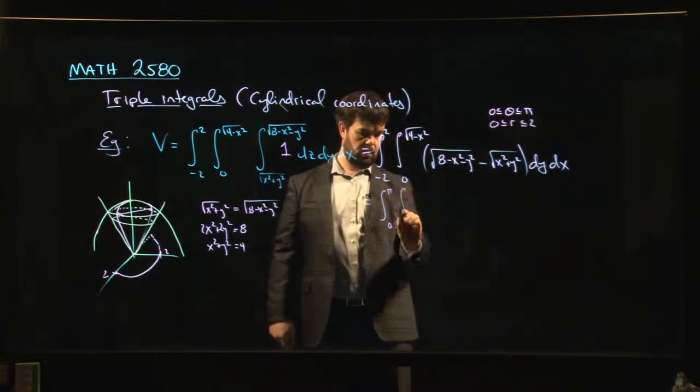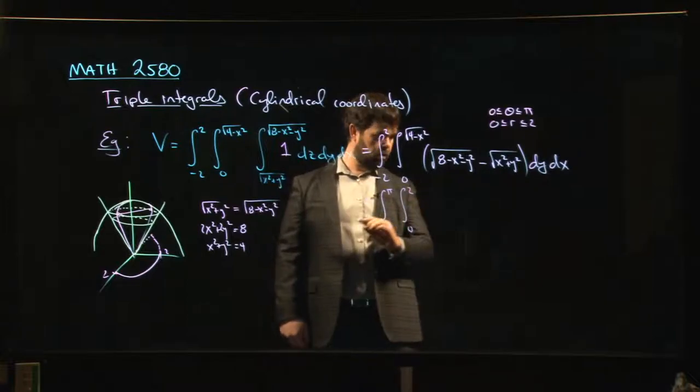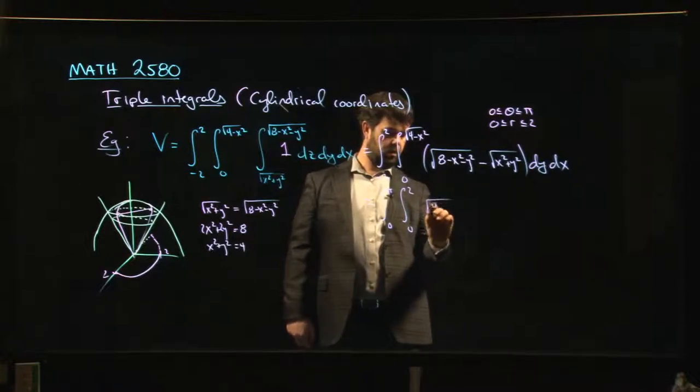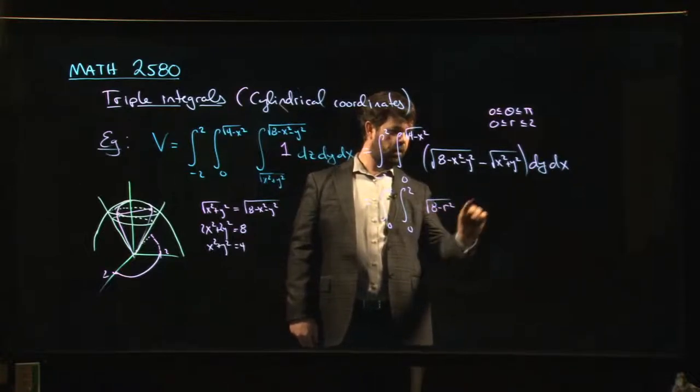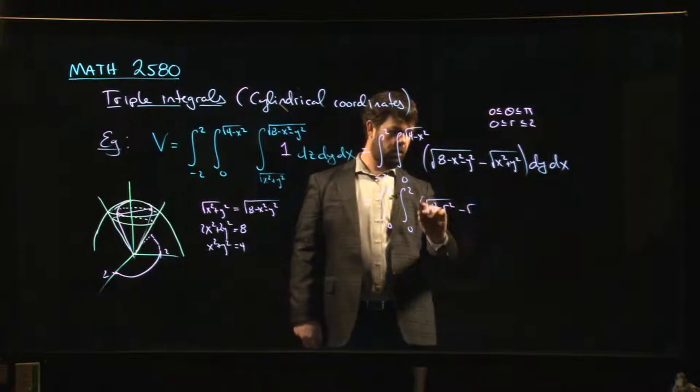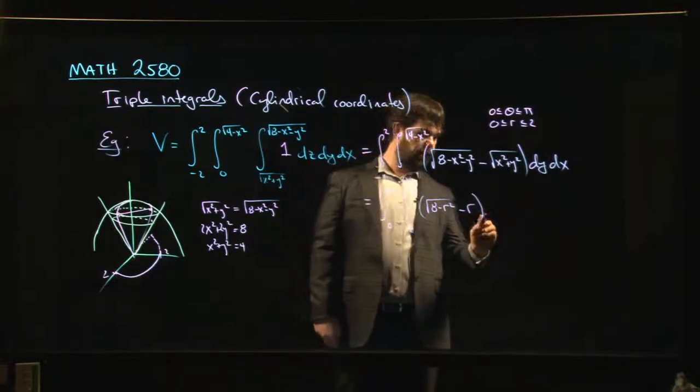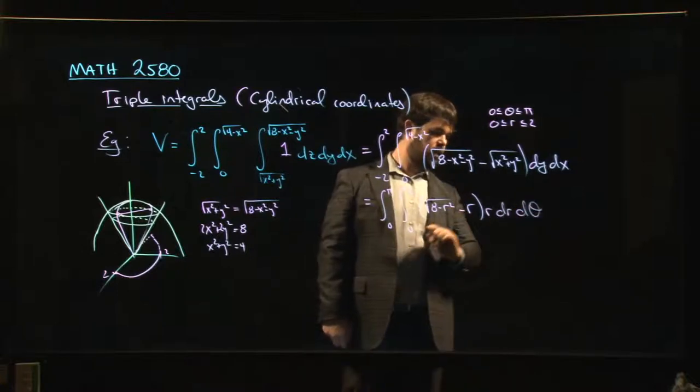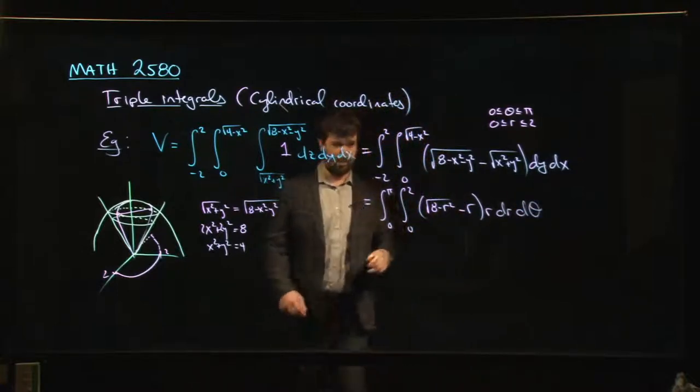So what I really should do is say, well, this is the integral from zero to pi, from zero to two of, well, this is eight minus r squared still under the square root, eight minus r squared, that's just r. dy dx becomes r dr d theta, and I can go from there.